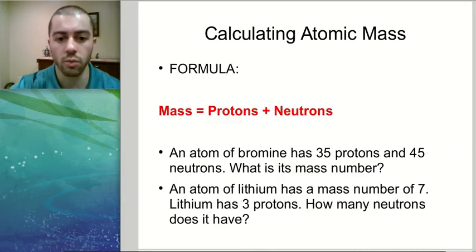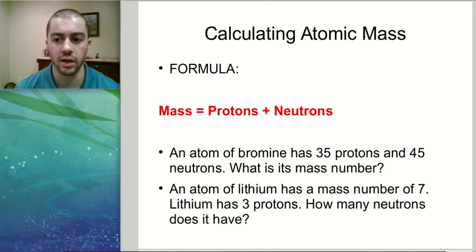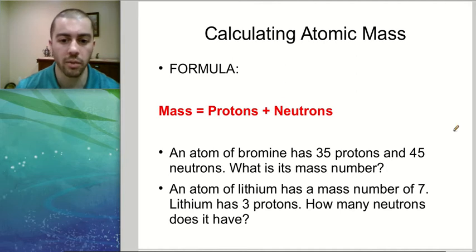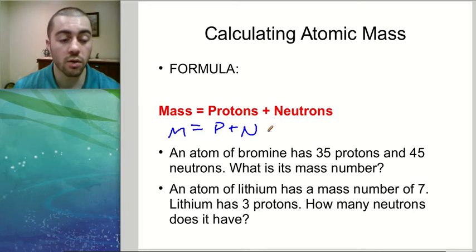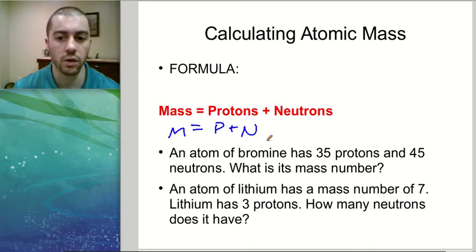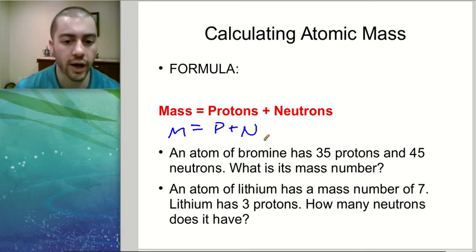So when we go to calculate atomic mass, we use the formula: mass equals protons plus neutrons, or abbreviated as m equals p plus n. Electrons don't appear here because they don't count toward the mass of an atom.